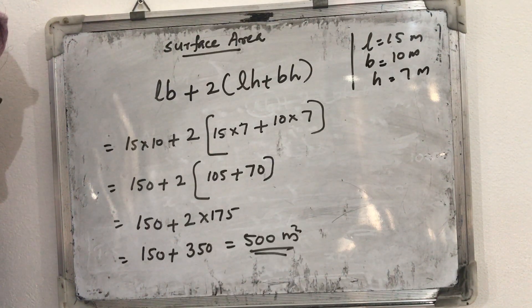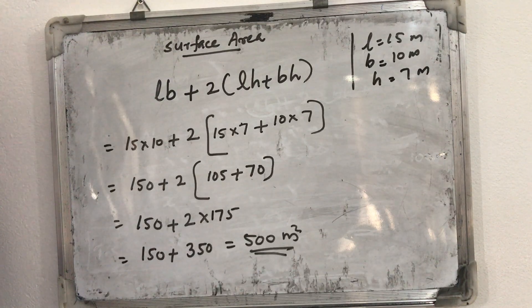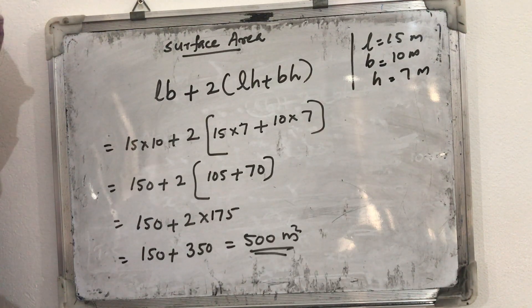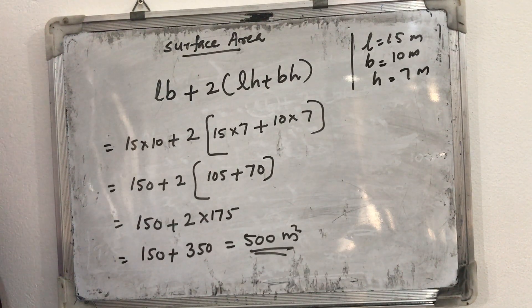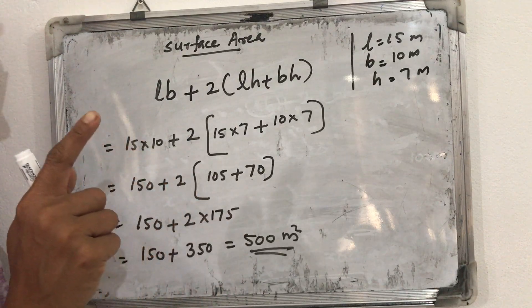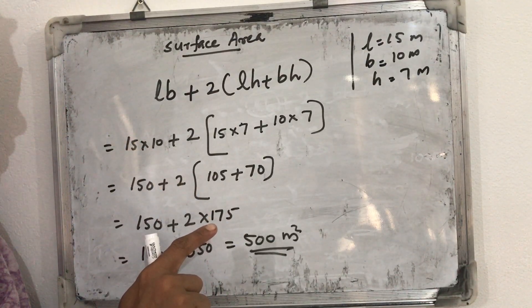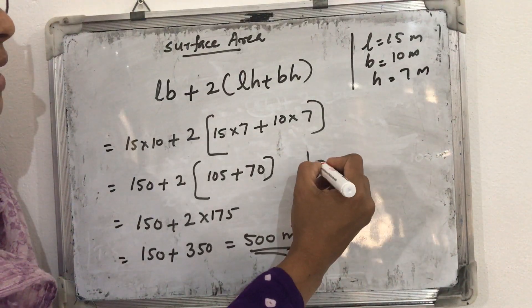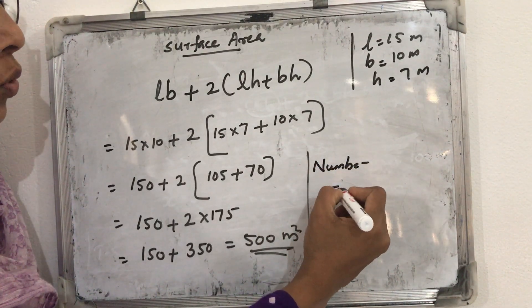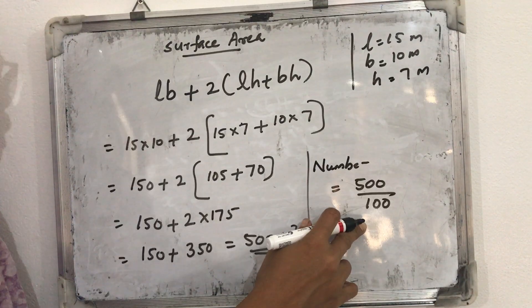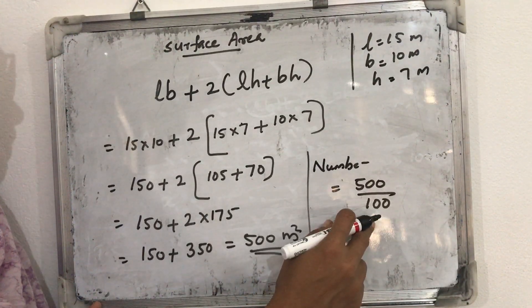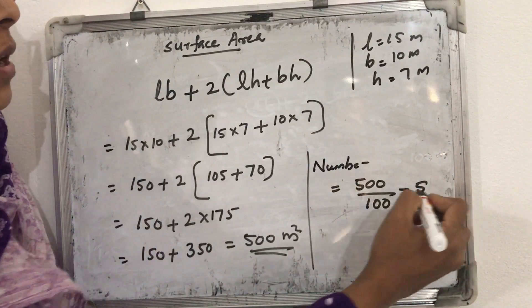The question asks: from each can of paint, 100 m² of area is painted. From one can, she can paint 100 m². We want to find how many cans of paint she needs to paint the room. Number of cans needed = total area ÷ 100. Since the total area is 500 m², the number of cans needed will be 5.